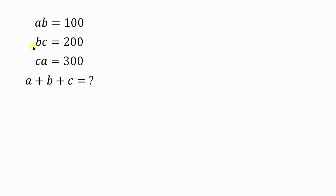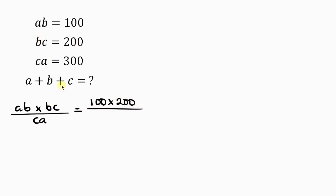Our first step: we take ab times bc divided by ca. So ab times bc divided by ca equals 100 times 200 divided by 300. From this, c cancels and a cancels, so b times b gives b squared. Then 100 times 2 is 200, divided by 3, so b squared equals 200 over 3.